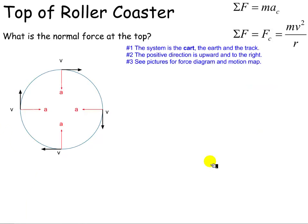We're going to look specifically at just the roller coaster. So if we're looking at the roller coaster, we will follow our steps still. We'll say our system is the cart, the earth and the track. The positive direction is upward and to the right. And let's check out our motion map. So this is what our motion map would look like.